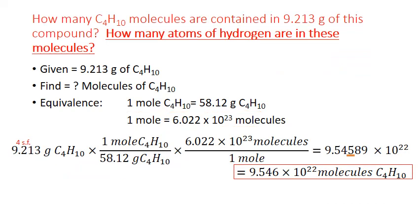What if we wanted to take this one step further? We know the number of butane molecules in this substance. But what if I really needed to know how many hydrogen atoms were in those molecules? It turns out that the formula itself tells us the relationship we need to solve this problem.